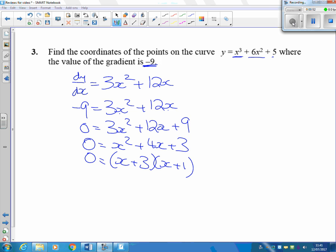Spot that it's quite a simple quadratic to factorize. You've got two answers: x equals minus 1, and x equals minus 3. They're the two points where the gradient is equal to minus 9.